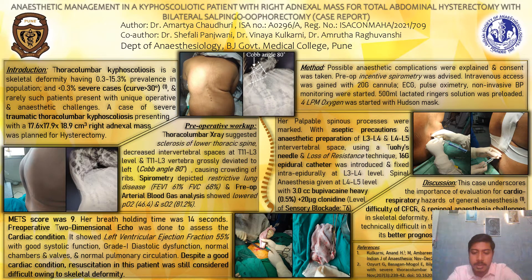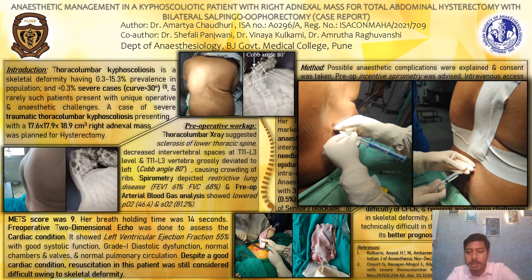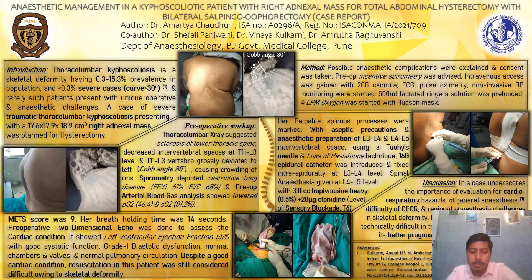An ICU bed with standby ventilator was prearranged, and we proceeded with regional anesthesia — that is, combined spinal and epidural anesthesia — with standby general anesthesia ready. Through the only two midline intervertebral spaces, L3-L4 and L4-L5, the epidural catheter was placed. A Tuohy needle was introduced through the L3-L4 interspace with a 15-degree deviation to the left from the coronal plane, and a 16-gauge epidural catheter was introduced to 8.5 cm in situ. Positive meniscus sign was checked before securing the catheter.